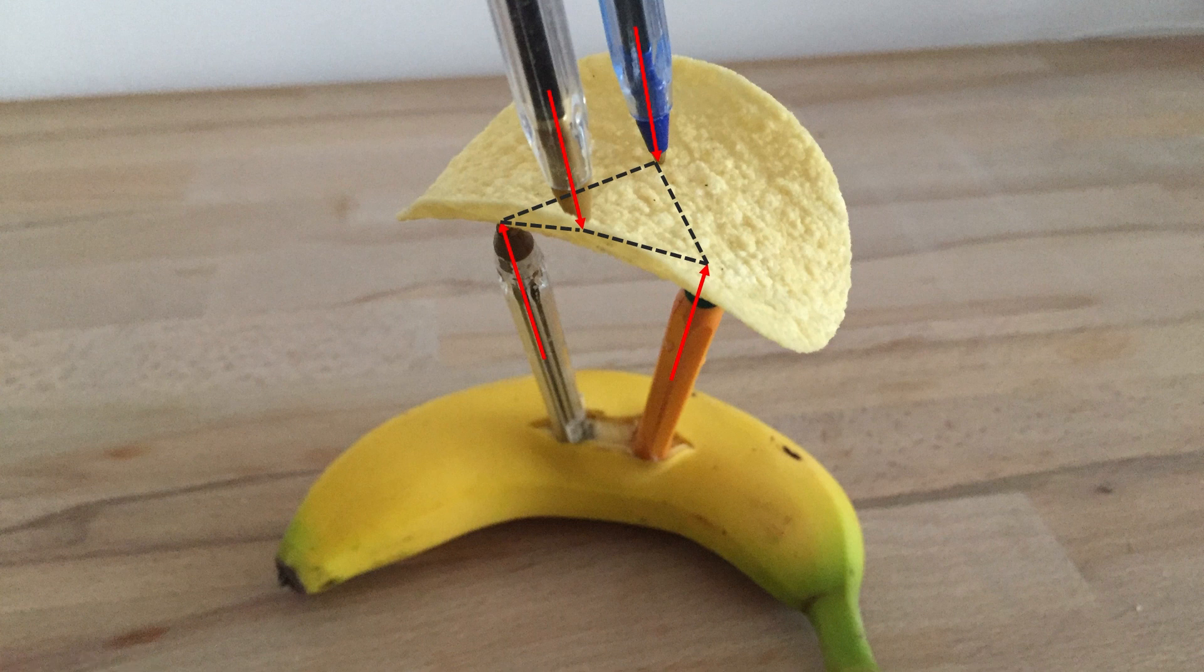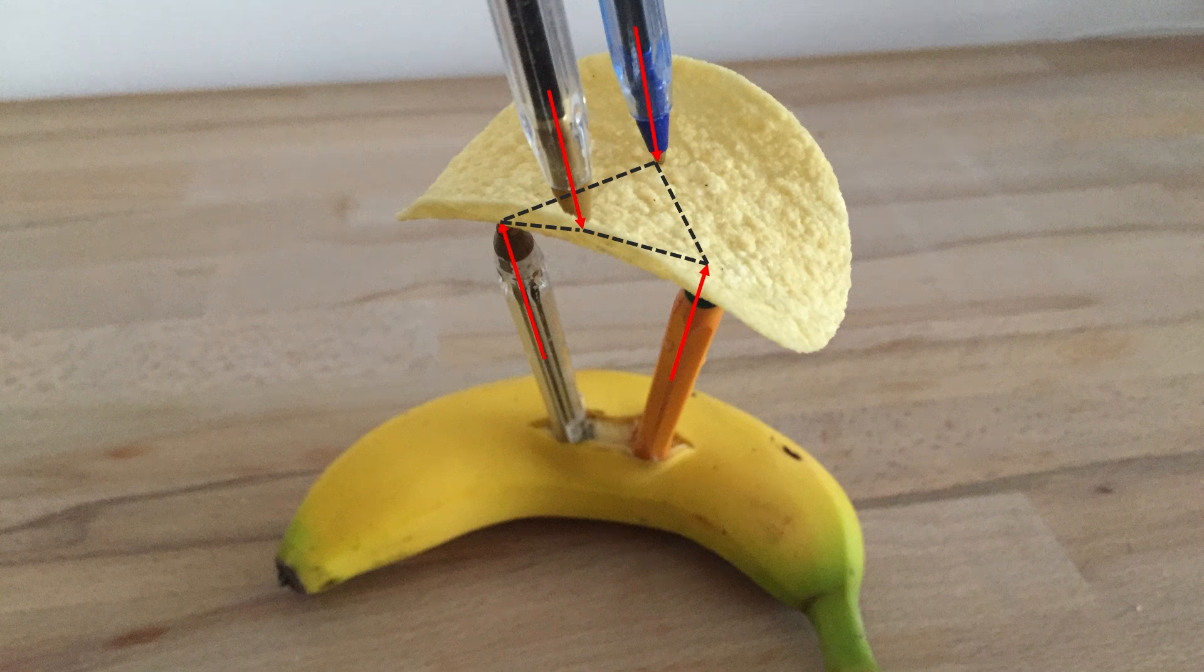And since no load is applied other than at the points, the forces along the asymptotic curves must be constant, but the twisting moment will vary.